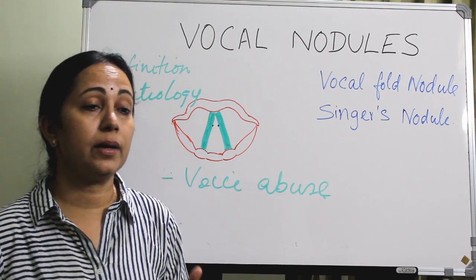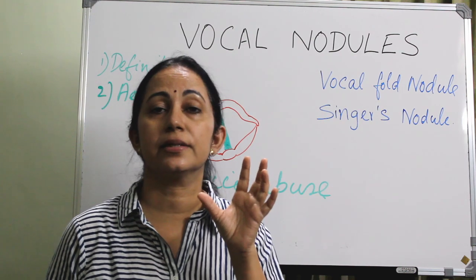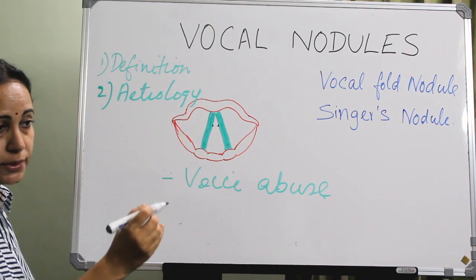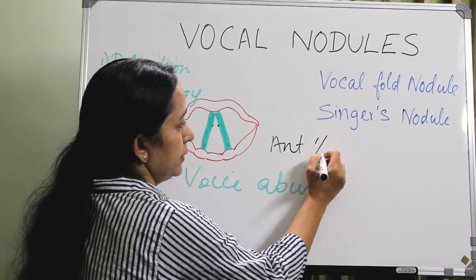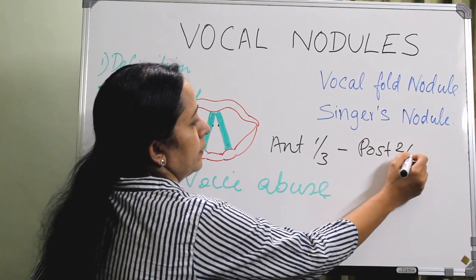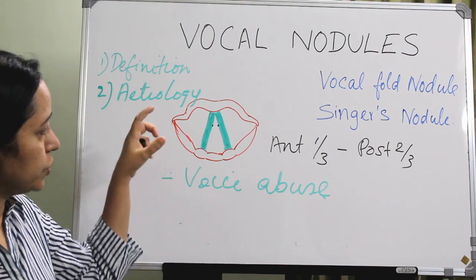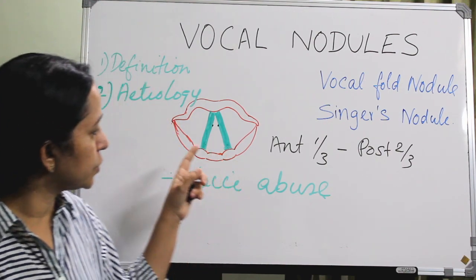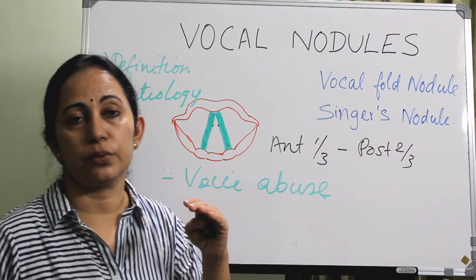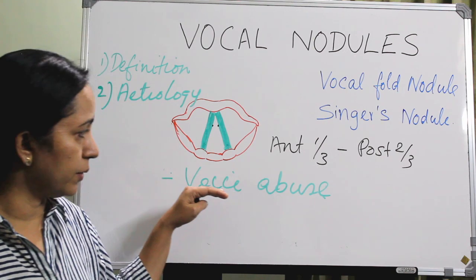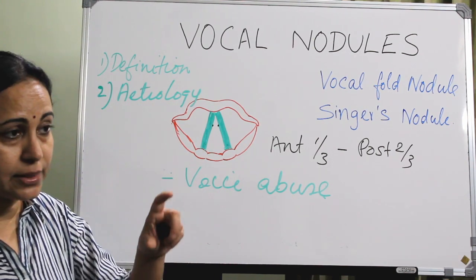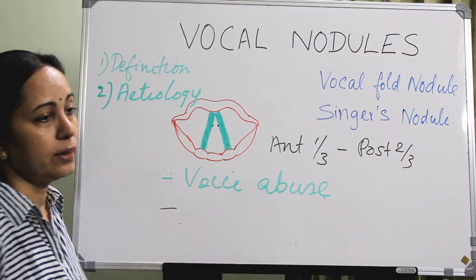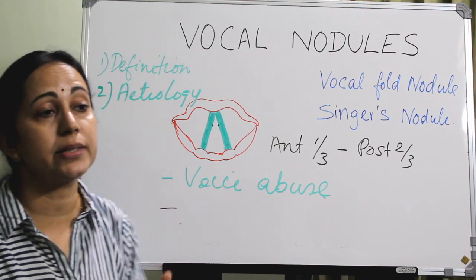This repeated trauma in the mid-membranous portion leads to localized thickening and epithelial swelling, typically at the junction of the anterior one-third and posterior two-thirds — that is, at the membranous vocal cords. This is the common site of vocal nodule formation, and usually these vocal nodules occur bilaterally. At exactly this point there is maximum vibration of the vocal folds, and a shearing force is also applied — this is the basis of the whiplash hypothesis.